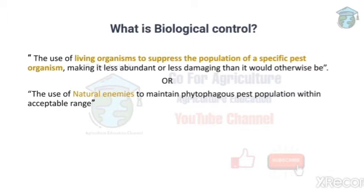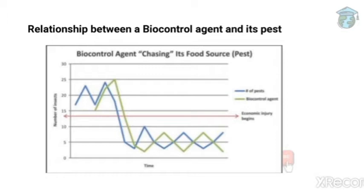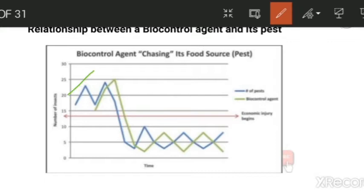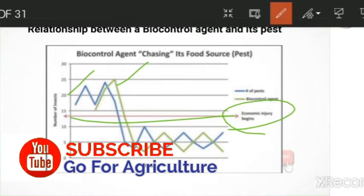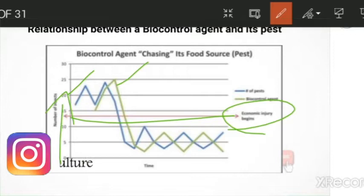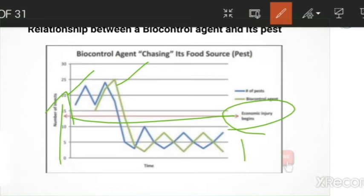Next, what is the relationship between a biocontrol agent and its pest? In the graph there are two colors: blue represents the number of pests and green represents the number of enemies. There is a line called the Economic Injury Level (EIL). If the number of pests goes above this line, the yield of the plant will be severely decreased. So we must ensure pest numbers stay below the EIL. In the graph you can see the blue line crossing the EIL, meaning plant yield is decreasing.